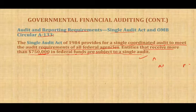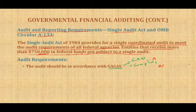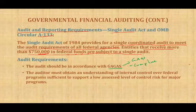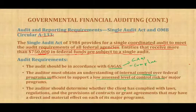What are the audit requirements for the SAA? The audit should be in accordance with GAGAS, which is GAS plus compliance. The auditor must obtain an understanding of the internal control over federal programs sufficient to support a low assessed level of control risk for major programs. The auditor must also determine whether the client has complied with laws, regulations, and the provisions of contracts or grant agreements that might have a direct and material effect on each of its major programs.